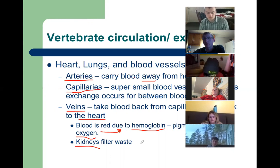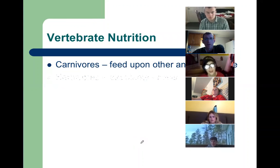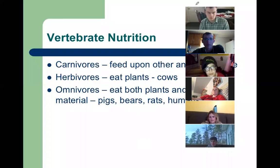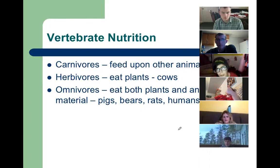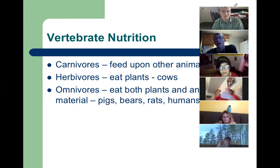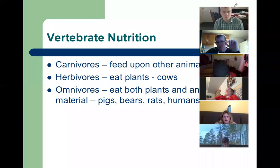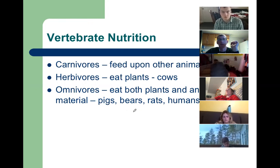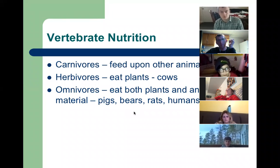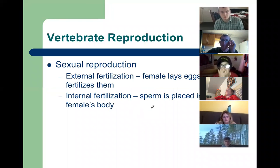Vertebrate nutrition — words you probably already know. Carnivores eat meat, herbivores eat plants, omnivores eat both. We also covered detritivores and saprophytes back in ecology. We're not going to spend much time here because you all learned this when you were little.